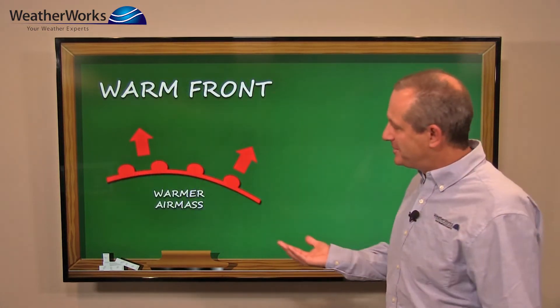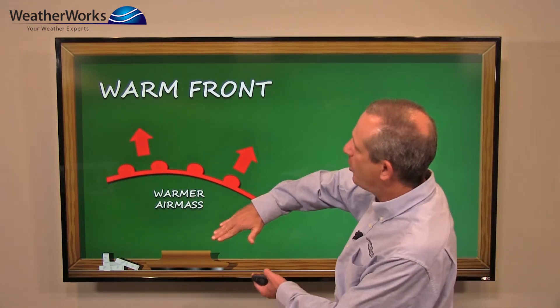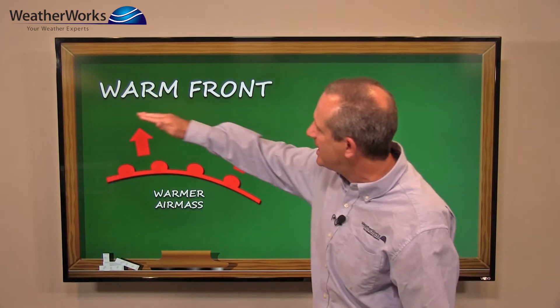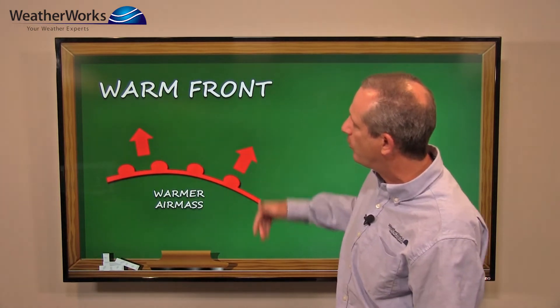Warm front, basically the same idea, but the warm air is overtaking the cooler air. Usually it's moving north, and a lot of times you will get precipitation ahead of a warm front.